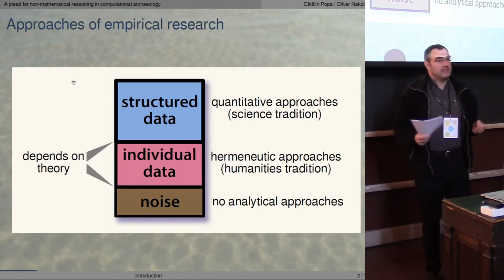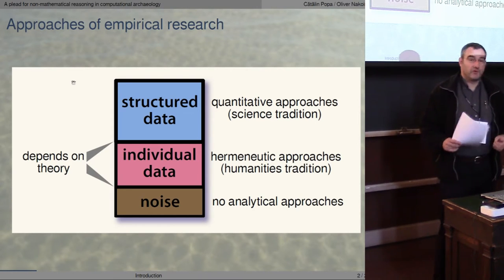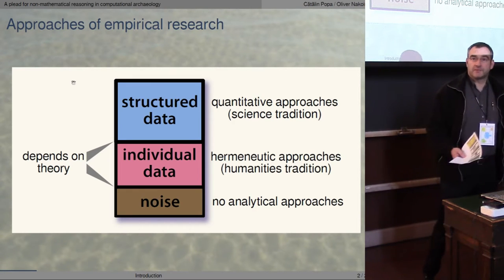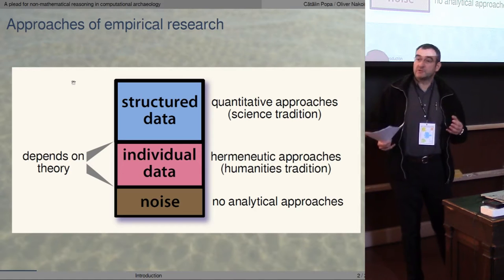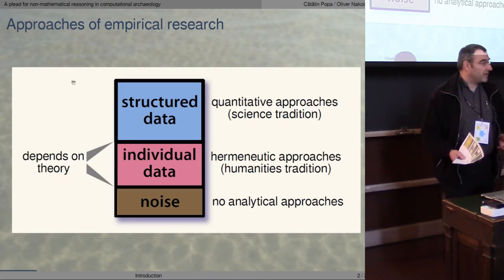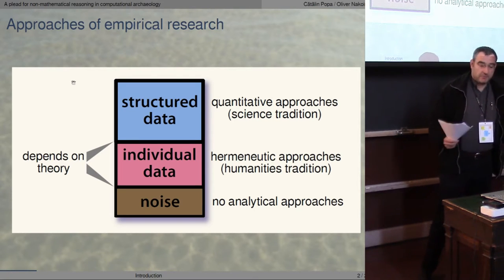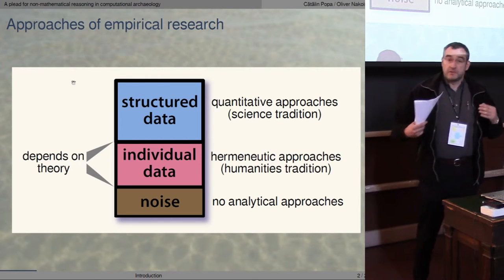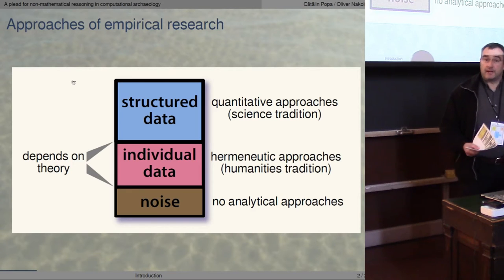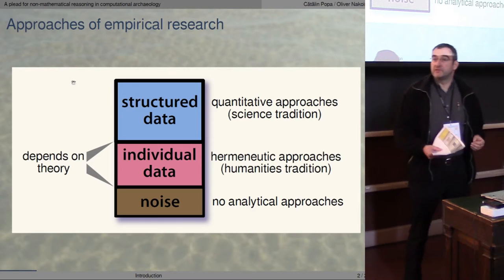In quantitative archaeology we are dealing with data, and we can classify those data in three categories. The first category is structured data, where we can reveal certain patterns which help us answer certain questions — this is the domain of quantitative archaeology. Then we have individual data which do not allow us to reveal patterns, but we can use different theories for integrating such data. The third type of data is noise.